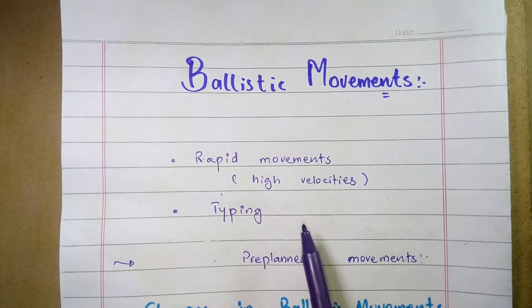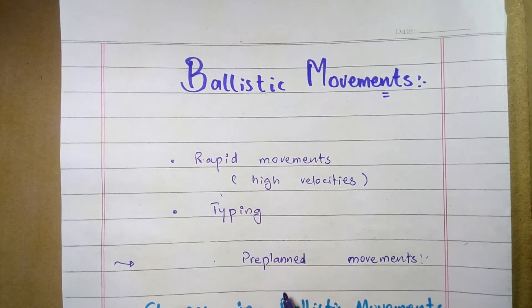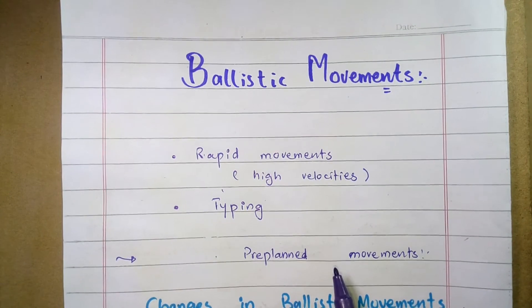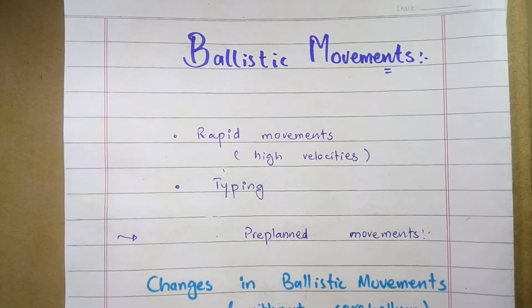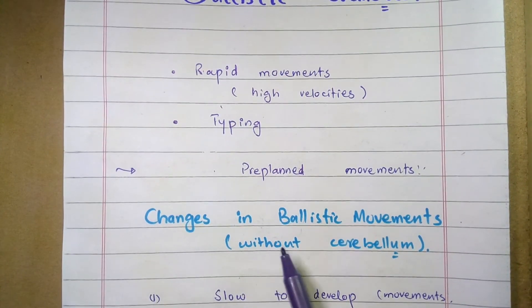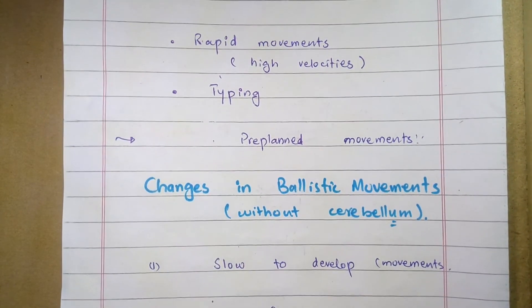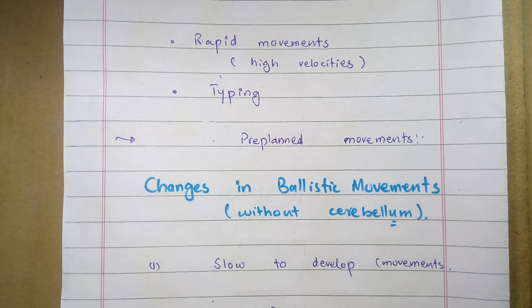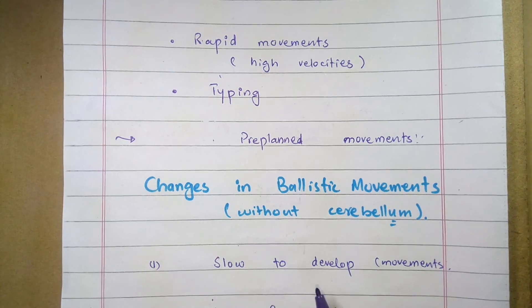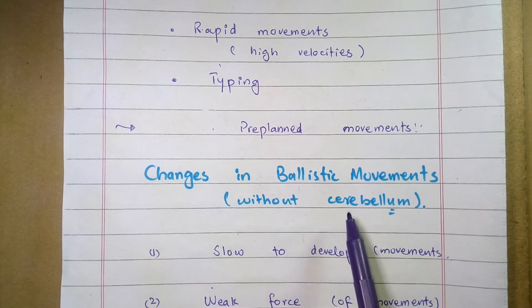Ballistic movements are rapid, pre-planned movements that are set into motion and then stopped. The major changes that occur in ballistic movements when the cerebellum is absent are as follows. Number one: the movements are slow to develop and do not have the extra onset surge that the cerebellum usually provides.